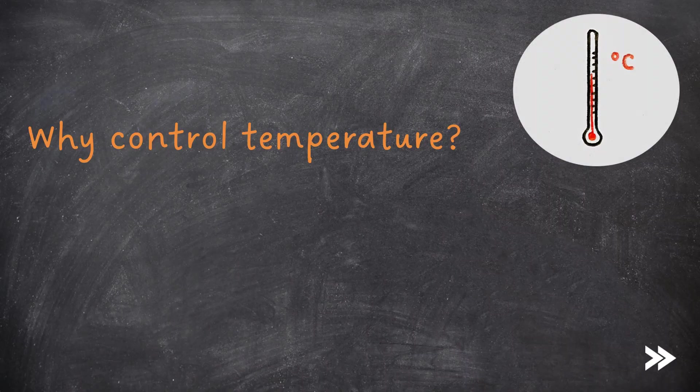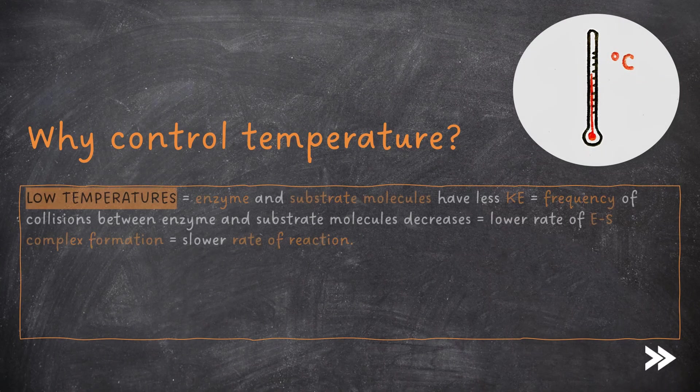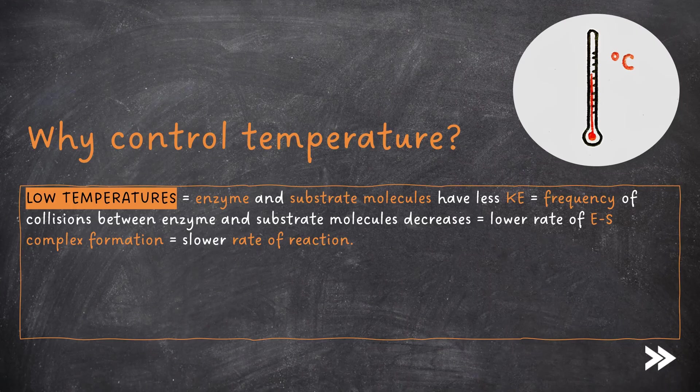What effect does temperature have on enzymes that makes it so important to control? Very low temperatures will slow the rate of enzyme activity because enzyme and substrate molecules have less kinetic energy, so the frequency of collisions between enzyme and substrate molecules decreases, which in turn slows the rate of enzyme-substrate complex formation. This slows the rate of reaction.